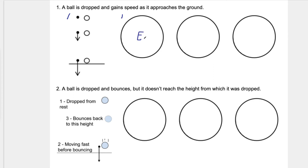If I were coloring it in, I would color the entire pie blue. For position two, the object is closer to the ground so it has lost some gravitational potential energy, since one of the factors influencing gravitational potential energy is the height of the object from the ground. So I can't have an entirely blue pie chart here — I have to have some split between gravitational and kinetic energy.